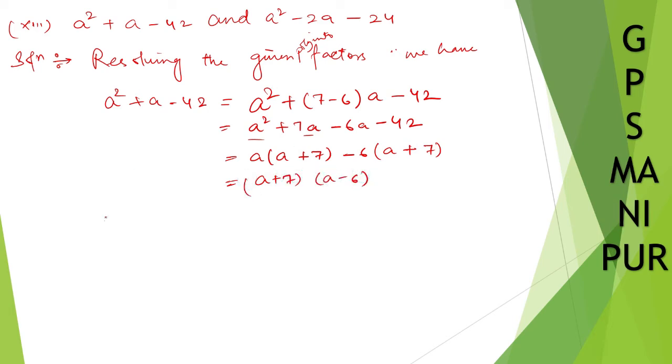Next polynomial, that is a² - 2a - 24. So what can I write? 6 times 4: 6 minus 4 is 2, and 6 times 4 is 24. We are just splitting the middle term. I hope you know how to split the middle term. So a² + 6a - 4a - 24.